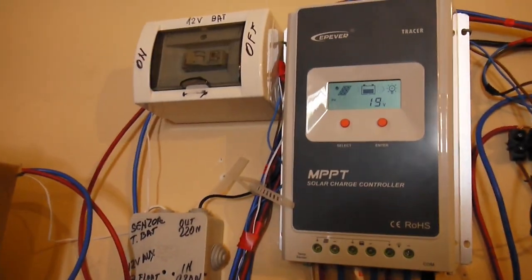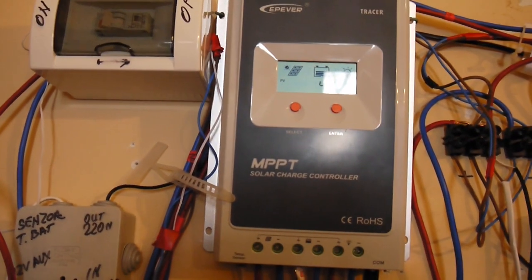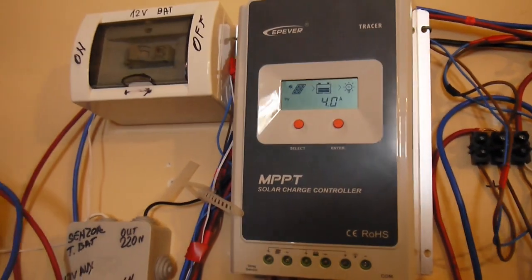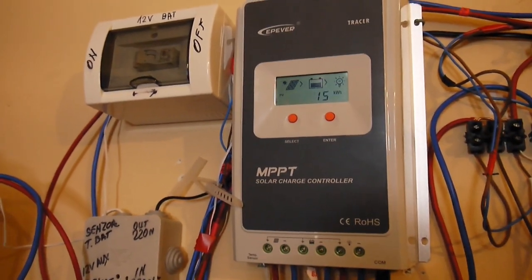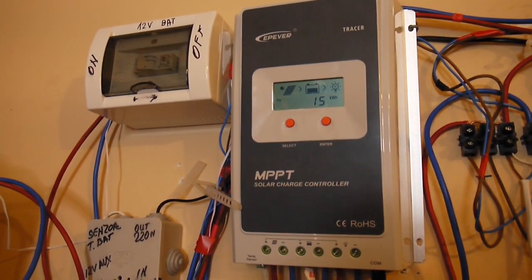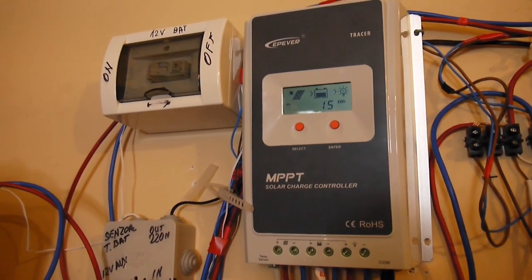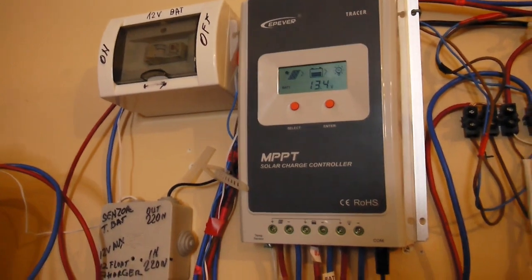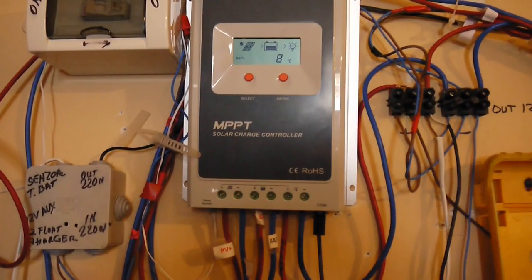So here we go. This is my EP Ever Tracer A, 40 amps, connected to around 450 watts that goes to a 100 amp hour battery. It's maintenance-free battery.